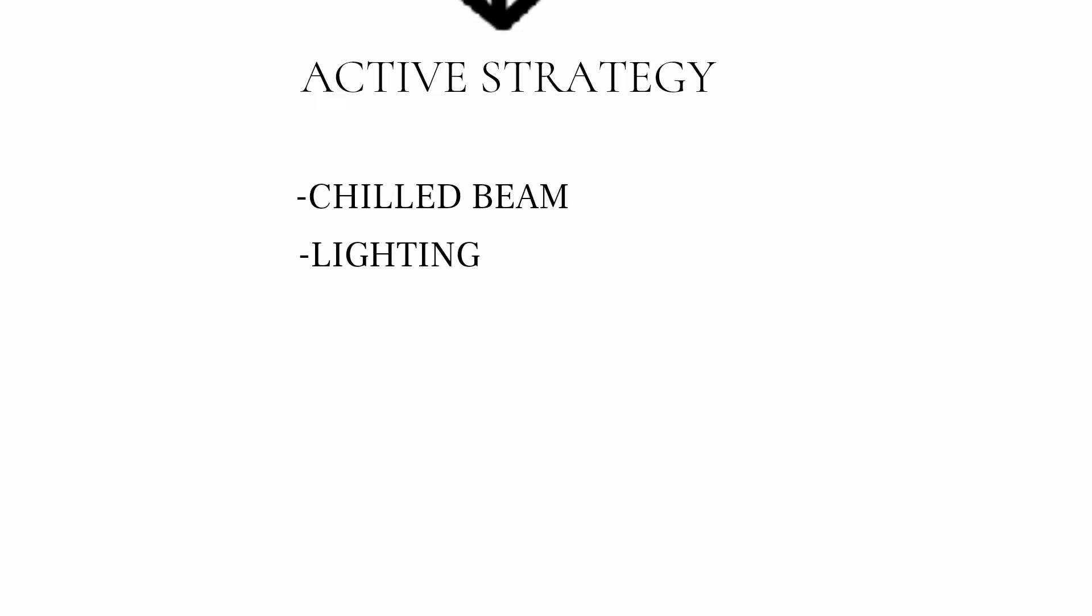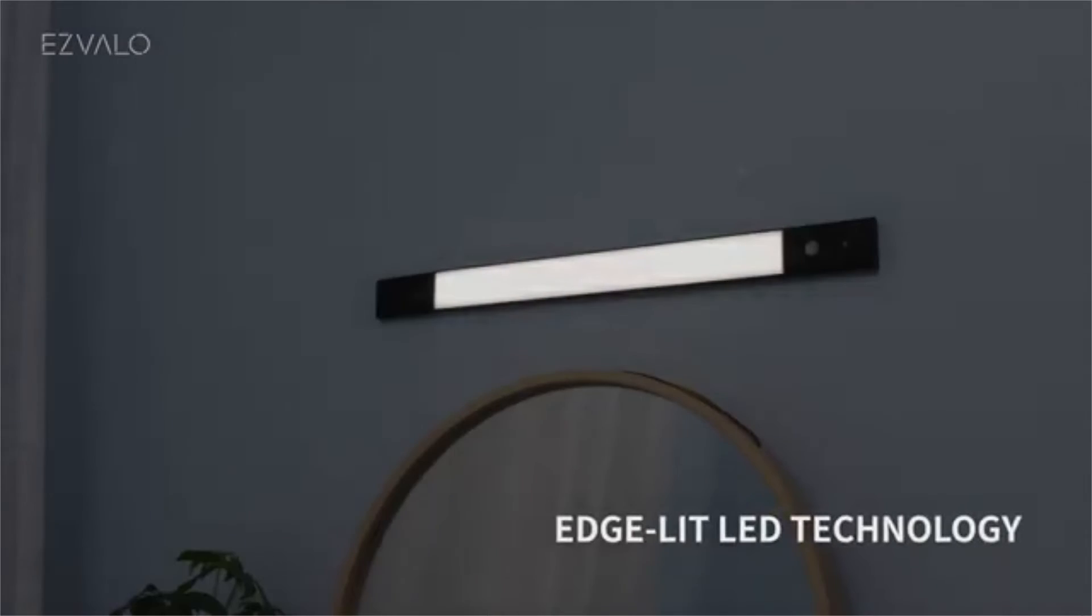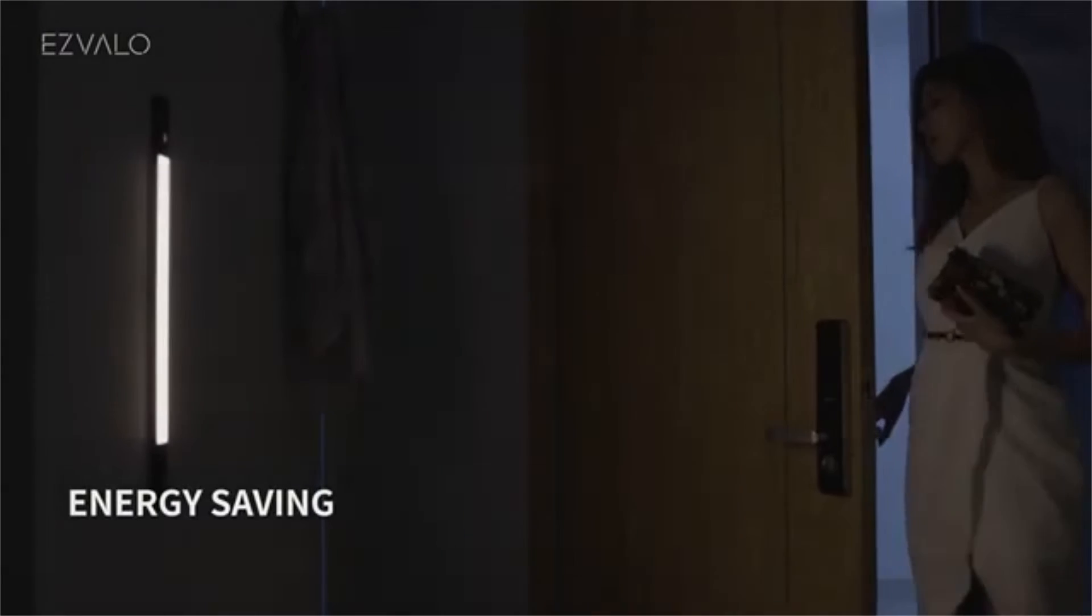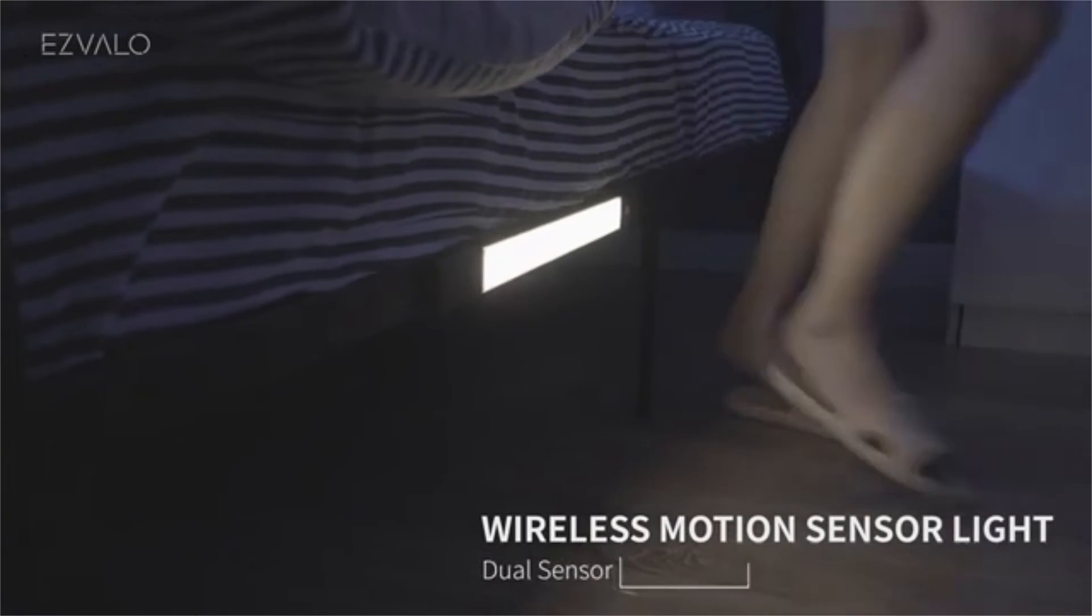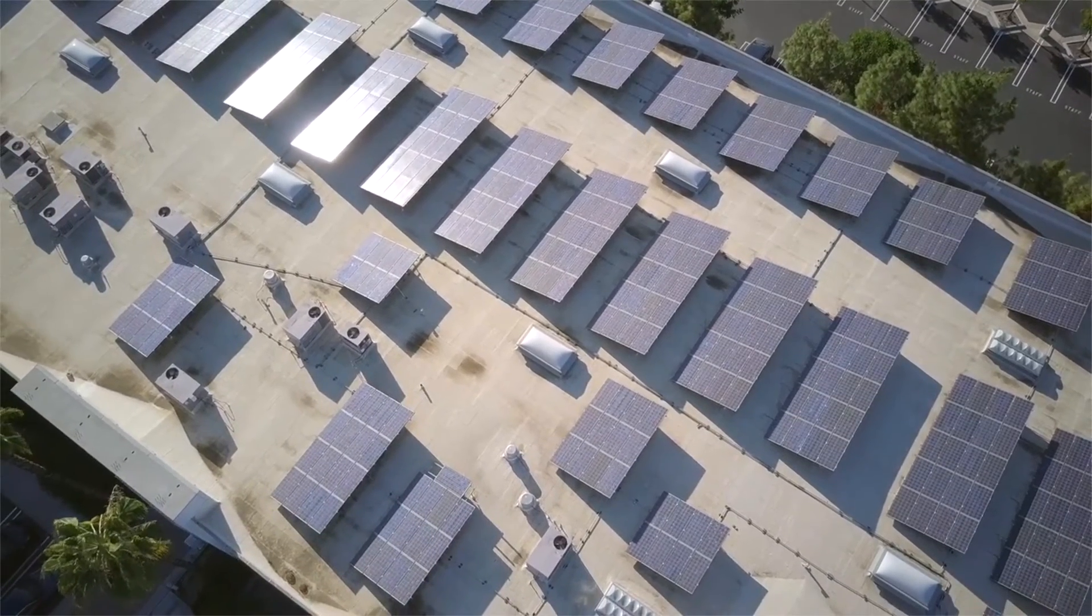Lighting: Lux level sensors help to control and minimize the usage of lighting automatically according to different situations. Lights used are LED with high luminous efficiency, which saves energy. The remaining lighting load is supplied by building-integrated photovoltaic.